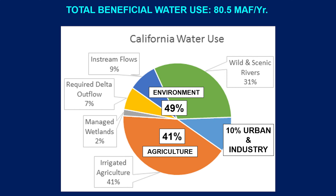Runoff between April and June has declined by 10% in the last century. An important occurrence is the shift in the peak of snowmelt. Comparing the first half of the century (1906–1955, shown in red) to the second half (1956–2007, shown in blue), the snowmelt peak has shifted earlier in time.